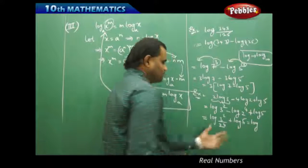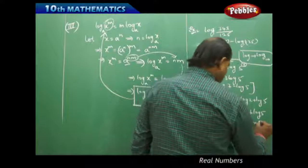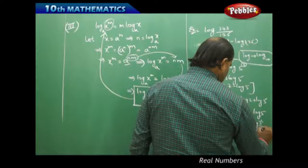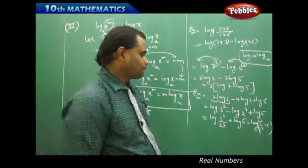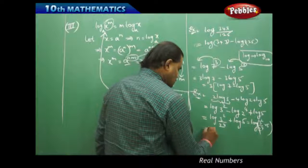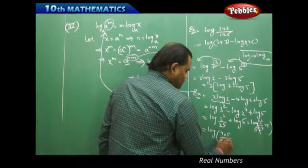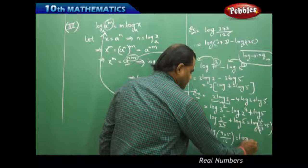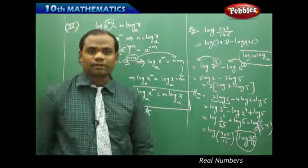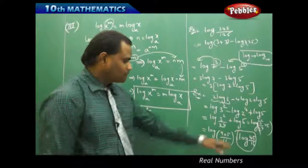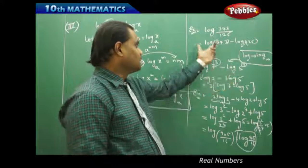In this case, log a plus log b equals log(ab) by the first law of logarithm. So therefore this can be written as log of (3 squared divided by 2 to the power 4) times 5. Then finally simplifying: 3 squared is 9 times 5, and 2 to the 4 is 16, so this reduces to a single logarithm: log(45 over 16) is the single logarithm value for the given problem.